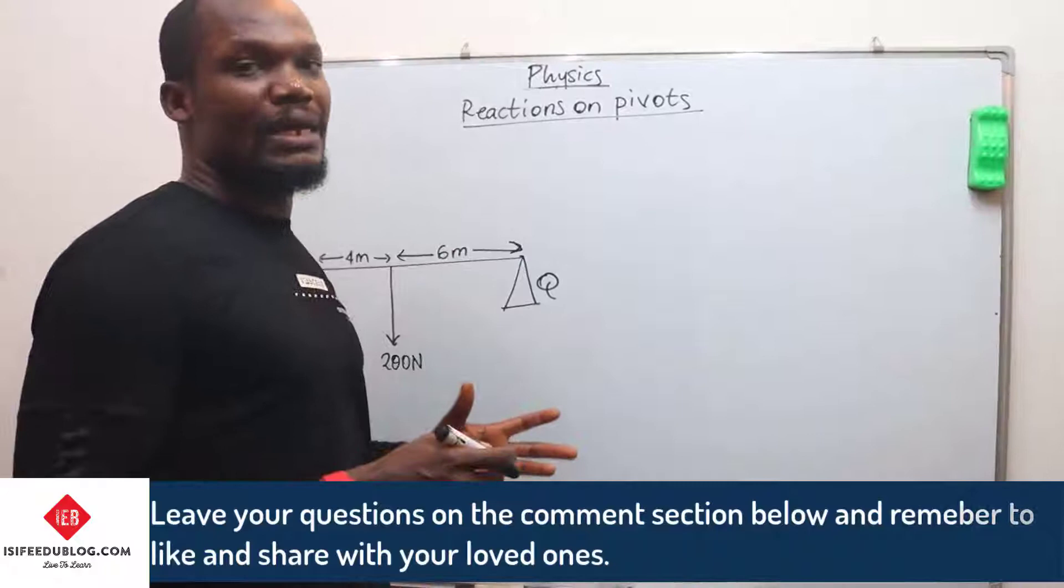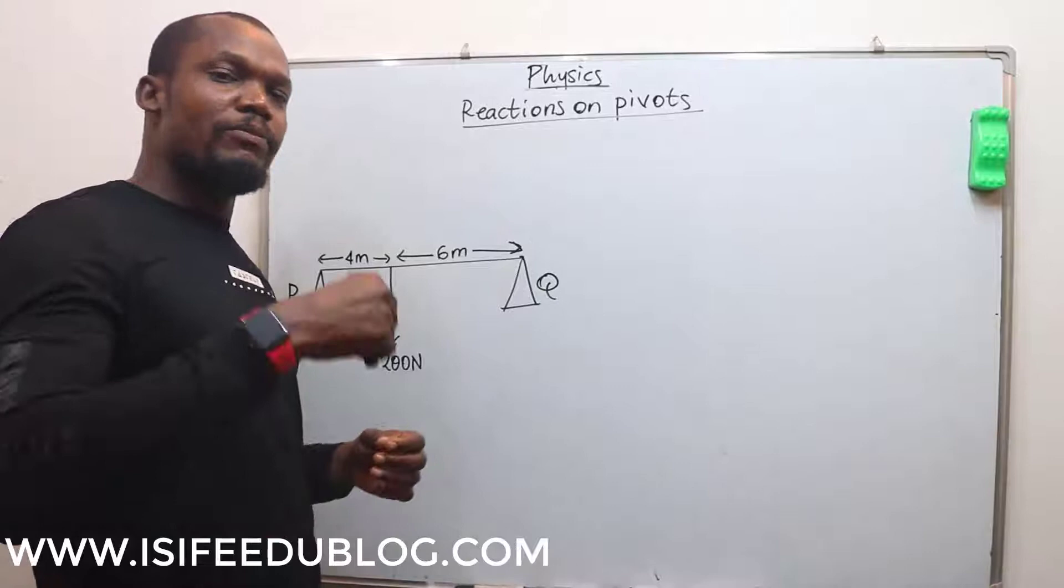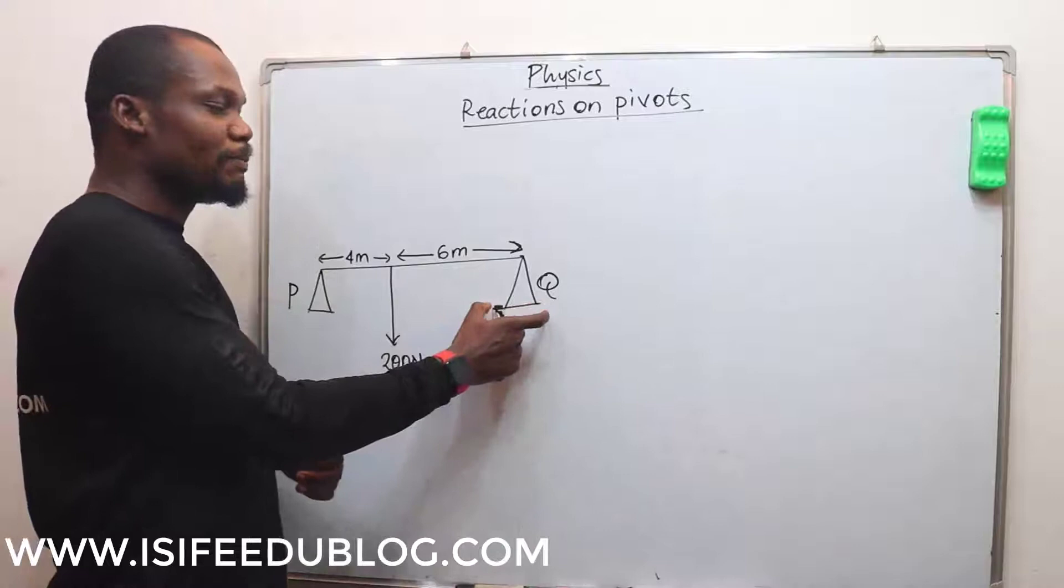With one pivot, the total upward force equals the total downward force. Therefore, if the mass of the rule is 100 grams, that means the 100 grams will be experienced on that one pivot. But at this point we have two pivots.